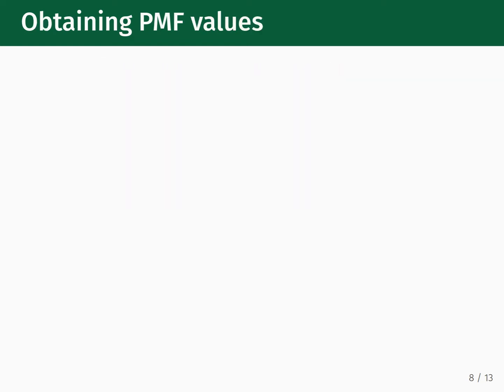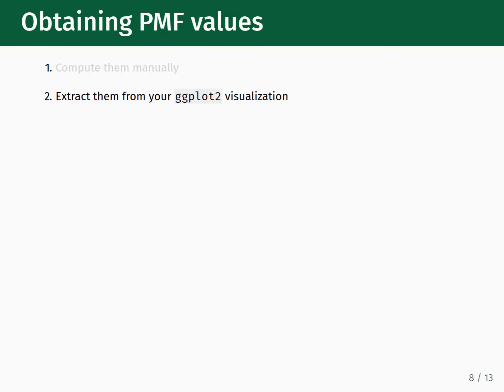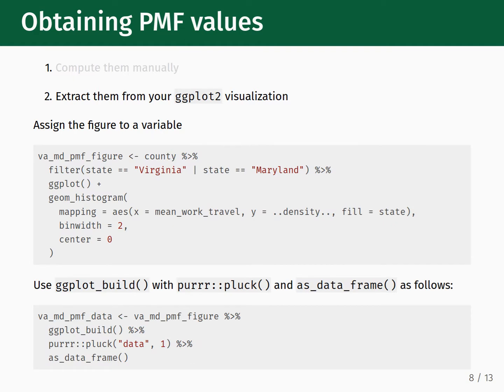What should you do if you specifically need the numerical values for the bar heights for the probability mass function? You have two options available to you. First, you could compute them manually. Second, you could extract them directly from your ggplot2 visualization. Since the visualization does the normalization for us automatically, it makes more sense to try and extract them. To do this, take the code you used to make the visualization and assign it to a variable. After you've assigned the visualization, pipe it into the function ggplot_build, then pipe that into purrr::pluck. Inside of the pluck function, put data in quotation marks as the first input and the integer 1 as the second input.